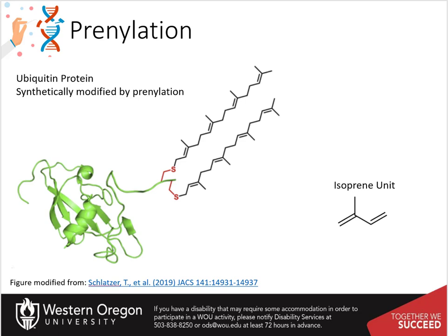Prenylated proteins are proteins with covalently attached hydrophobic isoprene polymers at cysteine residues on the protein. More specifically, these isoprenoid groups, usually farnesyl (15-carbon) and geranylgeranyl (20-carbon), are attached to the protein at cysteine residues near the C-terminal of the protein. The prenylation of lipid chains to proteins facilitates their interaction with the cell membrane, as the lipid chains can be inserted into the hydrophobic core of the lipid bilayer. Note the isoprene building block that is used to create these hydrophobic polymers. We will revisit this structure again when we consider the synthesis of lipids from the steroid class.